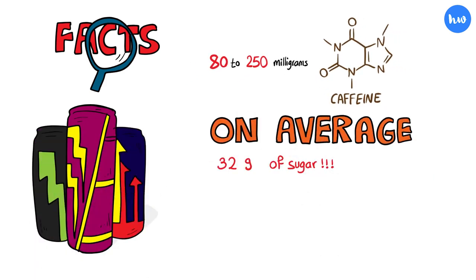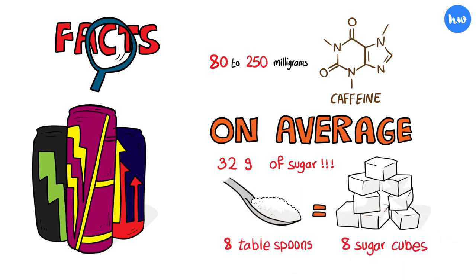Depending on the brand, most energy drinks contain, on average, 32 grams of sugar. That's 8 teaspoons of sugar, the equivalent to 8 sugar cubes.